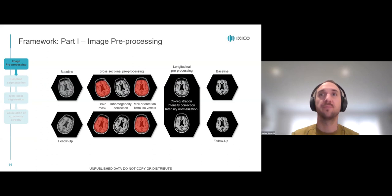Part one, image processing, can be split up into cross-sectional and longitudinal pre-processing. In the cross-sectional step, we process each of the two scans, baseline and follow-up, separately. This includes stripping the skull, correcting for intensity inhomogeneities, and initiating a common orientation.